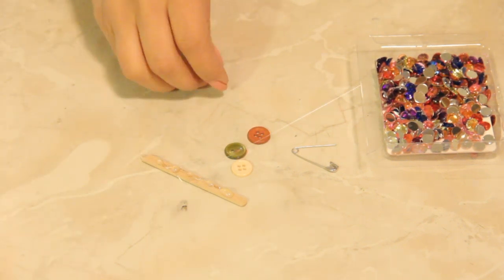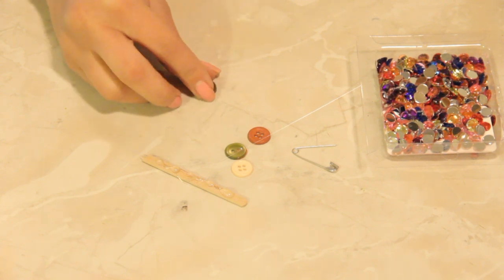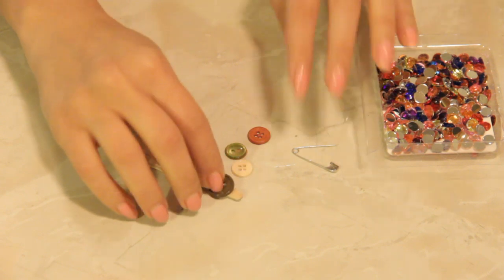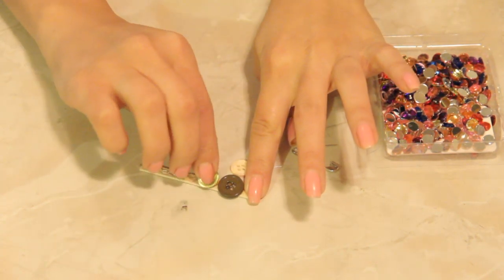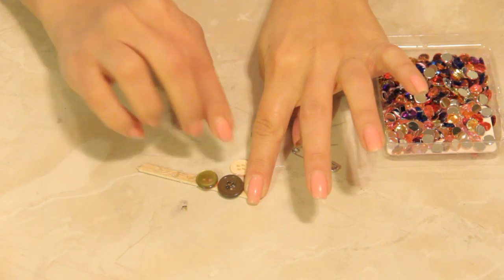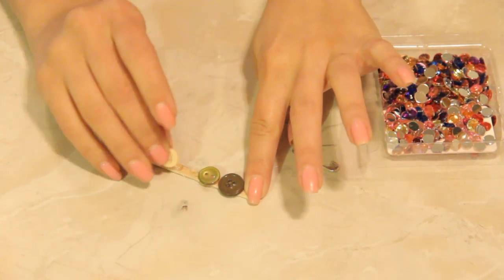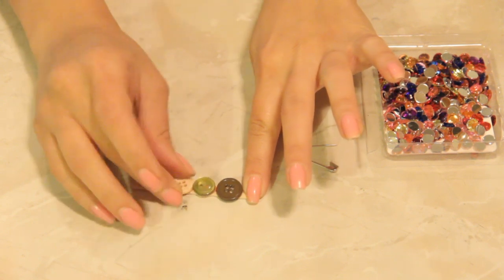So now that I've dabbed on some hot glue I'm going to take some buttons of all sizes and colors, and I'm going to lay these buttons on the popsicle stick.